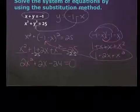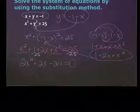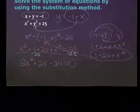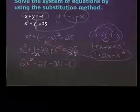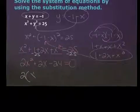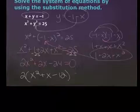Now I've got to factor. First thing you want to see is: can I factor something out? Is there something in all three terms that I could take out? A two. Make it easier on yourself. So take out the two and I get x squared plus x minus 12.